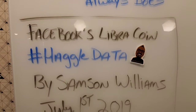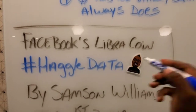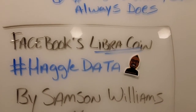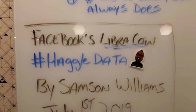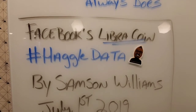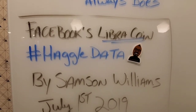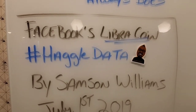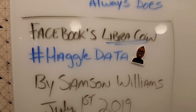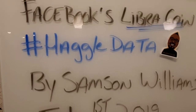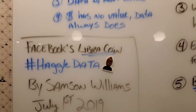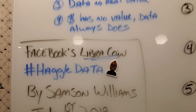Facebook just wants the haggle data. In order to get the haggle data, they have to introduce Libra coin, because Libra coin provides them the opportunity to actually track, on that distributed ledger, the entirety of a transaction — someone selling a chicken to someone else — using their communication platform, which is Facebook. The real value is the haggle data.